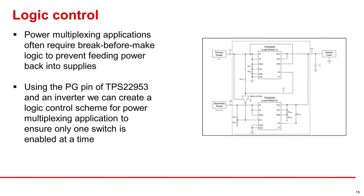Some systems may need logic control to operate. For example, in a power multiplexing application, they may need break before make logic to ensure there isn't a path from one supply to the other through our device. We can use the PG pin to ensure one device is enabled at a time. This diagram shows two TPS22953 load switches in a power muxing application with break before make logic.